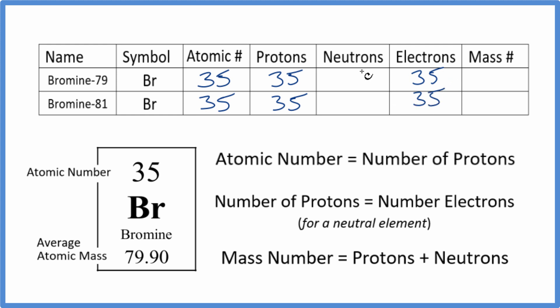Now we need to look at the neutrons and mass number. Often you're given one of these and asked to figure out the other. Sometimes they'll give you information like bromine-79 - that 79 is the mass number. Likewise, bromine-81 has a mass number of 81. The mass number is the number of protons plus the number of neutrons. So protons plus neutrons equals the mass number.